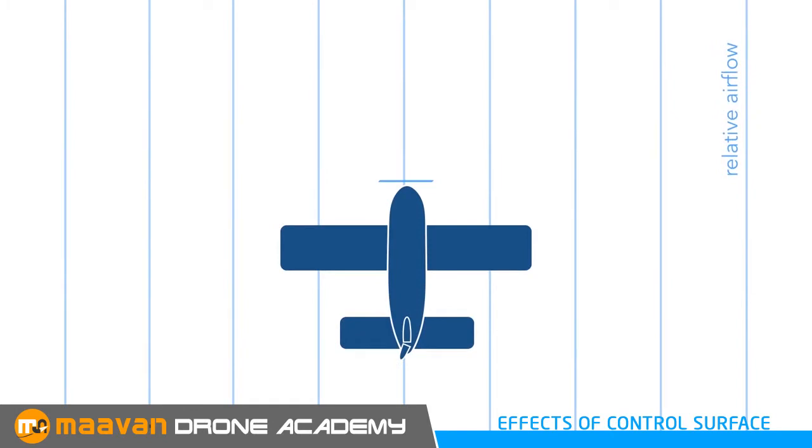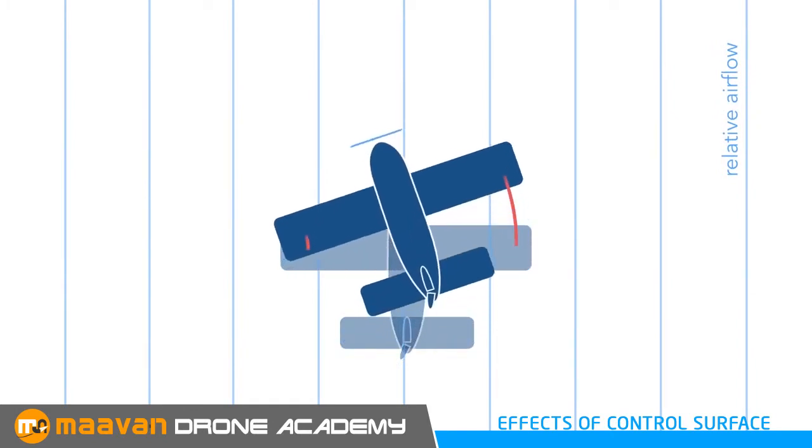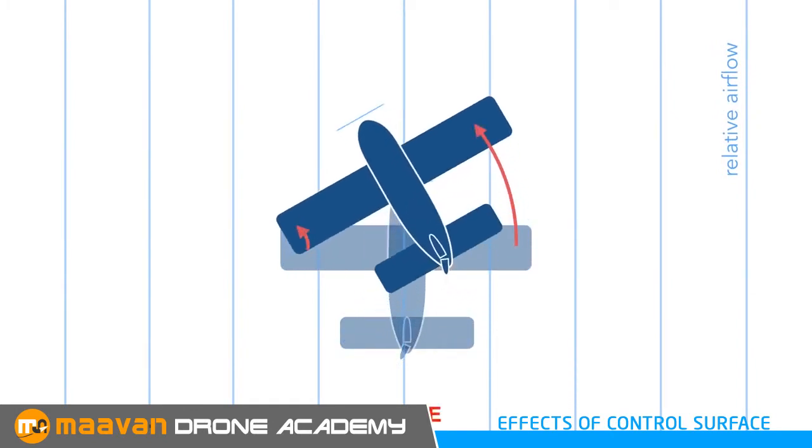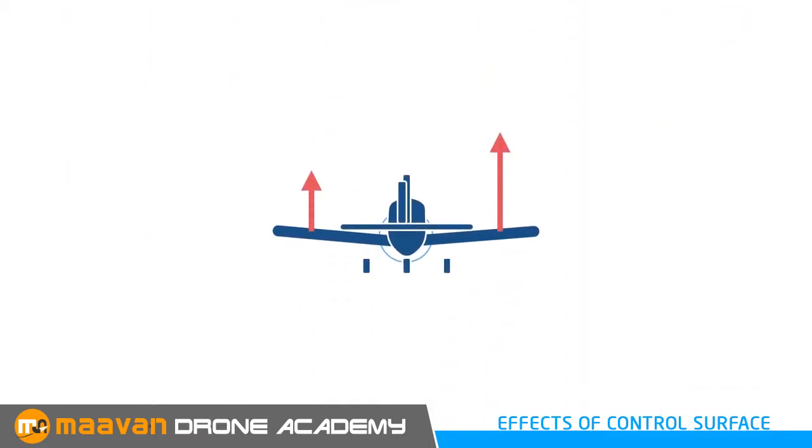The primary effect of rudder is a yaw. As the aeroplane yaws, the outer wing moves forward, further than the inner wing, thus it moves a little faster. Faster airflow equals more lift.